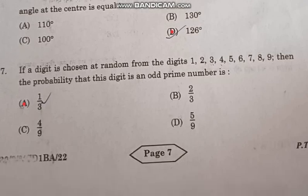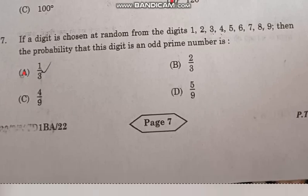Question number 7: If a digit is chosen at random from the digits 1, 2, 3, 4, 5, 6, 7, 8, 9, then the probability that this digit is an odd prime number is correct answer option A, 1 by 3.